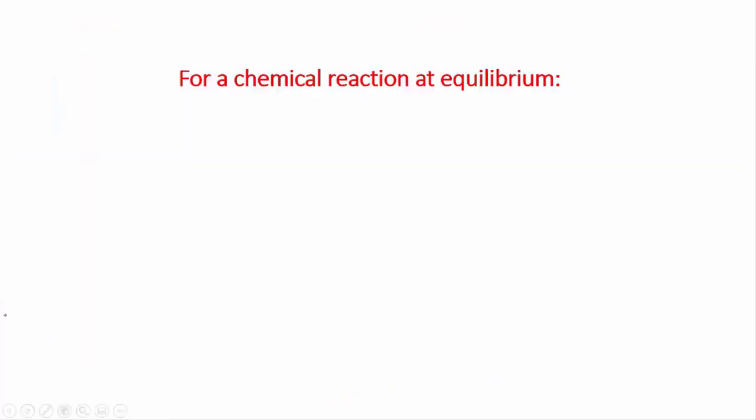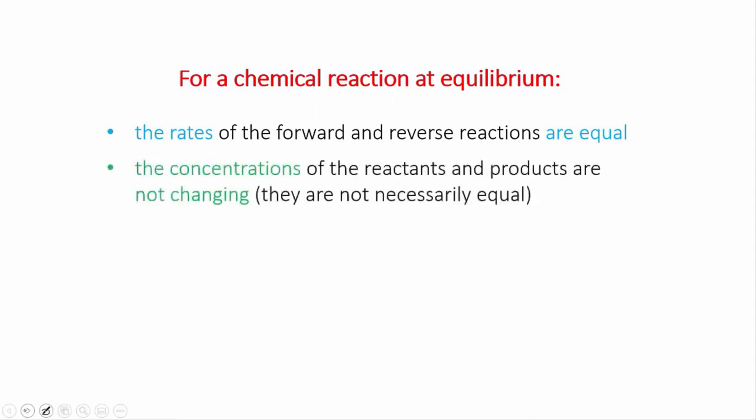So the key points are these. If a chemical reaction is at equilibrium, the rates of the forward and reverse reactions are equal. This is the primary definition of equilibrium. When this is the case, the concentrations of the reactants and the products are not changing. But they don't necessarily have to be equal.